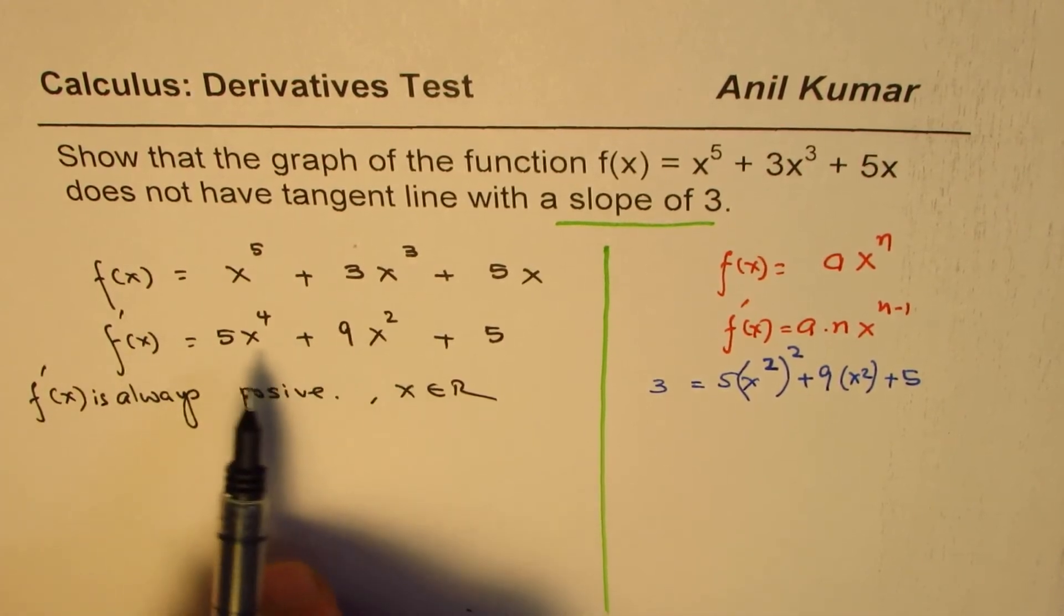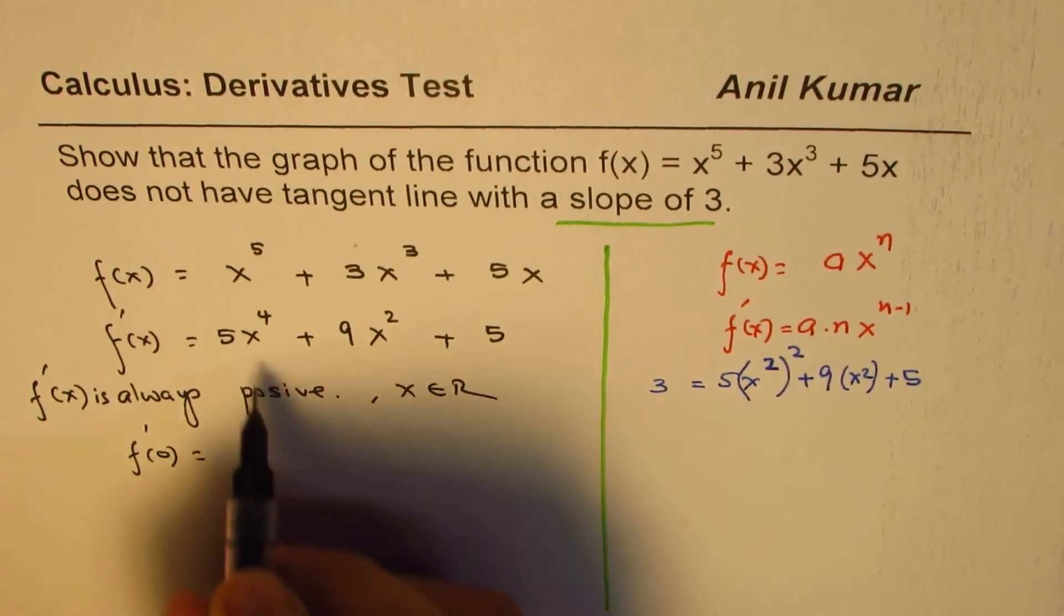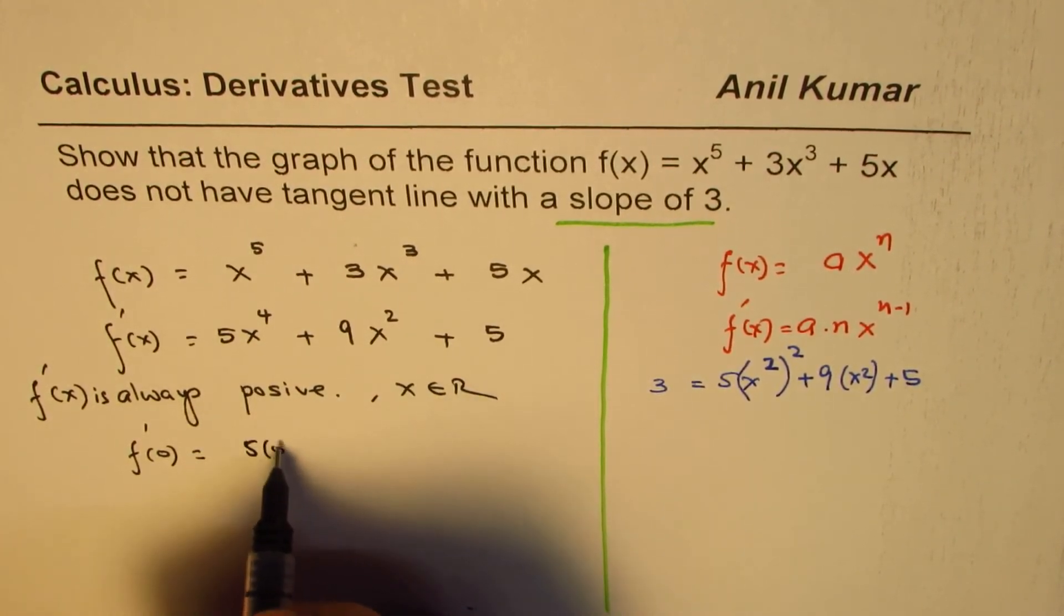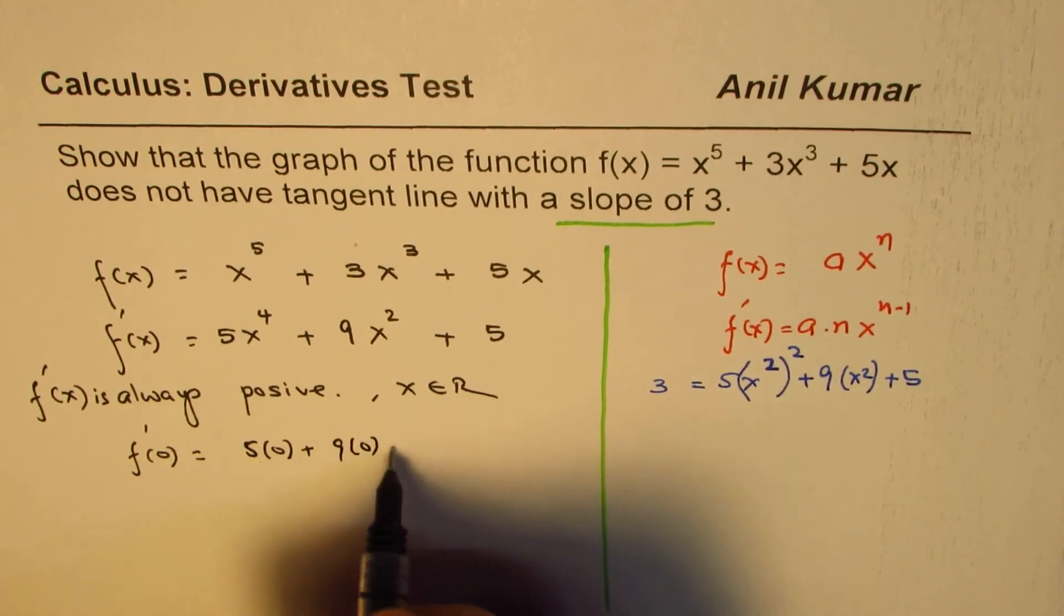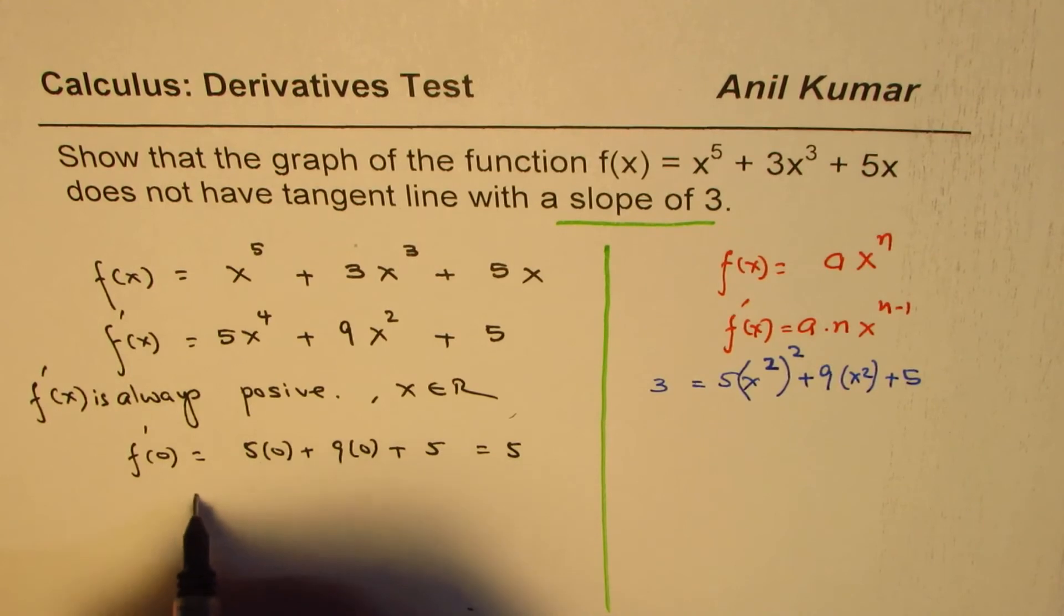Always positive. What is the minimum value? Now if I substitute zero for x, for example, f'(0) will be 5 times 0 plus 9 times 0 plus 5, which is 5.